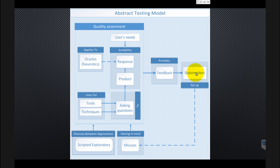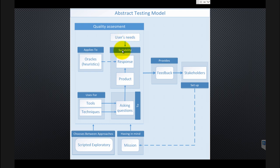The third pitfall is around users. If the product is new, we don't have users yet, so we need to guess what they want — and we can be wrong. Also, we can have a lot of users and divide them into subgroups to understand each group's needs. It's not always clear who the users are and what their needs are for the product. Additionally, messing up the oracles can be a problem — we can choose oracles that are not appropriate for our product.